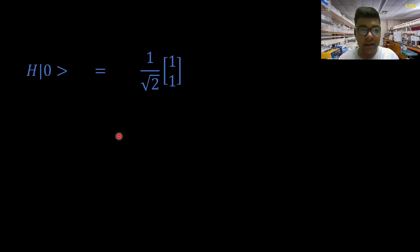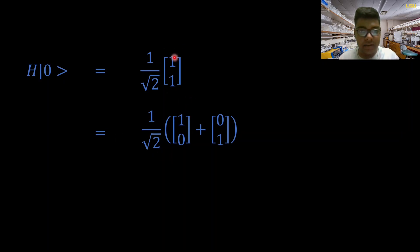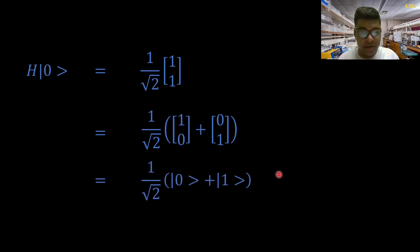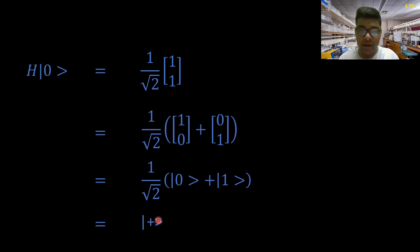Now let's write this more creatively. We can separate this vector into the sum of two vectors. The reason we do this is that if you carefully observe, these are nothing but |0⟩ and |1⟩. We are trying to represent the operation in Dirac notation, since that's the standard in quantum computing. This particular state of superposition is actually represented as the plus state. I will show you the visualization of this state, and I also have a little homework exercise for you.